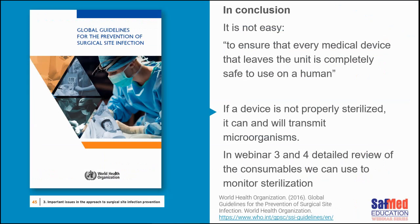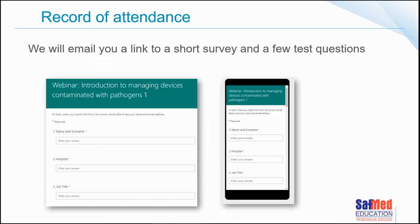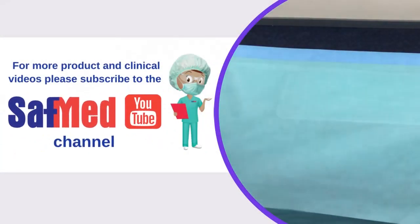In conclusion, it's not easy to ensure that every medical device that leaves the unit is completely safe to use on a human. If a device is not properly sterilized, it can and will transmit microorganisms. We have to do everything in our power to prevent surgical site infections, and one of the ways is making sure we monitor our sterilization processes — we need sterility assurance. In webinars three and four, we'll do a detailed review of the consumables we can use to monitor steam sterilization and other types of sterilization. Thank you very much for joining us. We'll be sending you a link to a survey, and if you'd like a certificate of attendance, you'll need to answer the test questions.